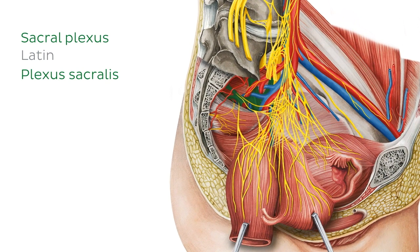In this image, we're looking into a female pelvis from the right side, and we can see much of the left pelvic muscles and the neurovasculature. Highlighted in green, hiding in this area, is much of the sacral plexus.